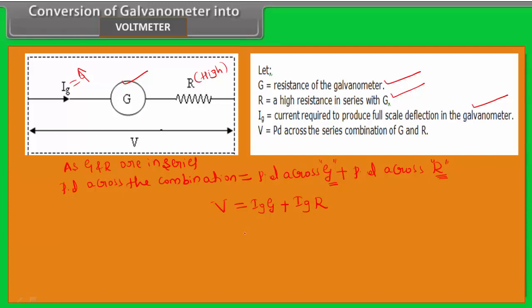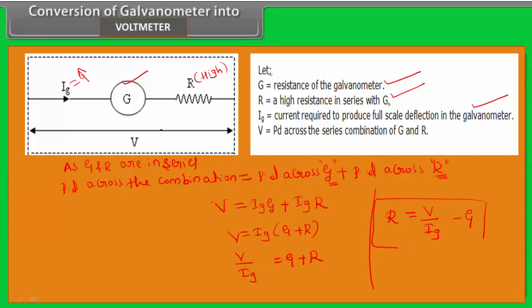The potential difference across this combination is mathematically denoted by V. V is equal to Ig times G, plus Ig times R. Since Ig is common, V equals Ig into (G plus R), or V divided by Ig equals G plus R. Therefore, the value of high resistance R equals V divided by Ig minus G. This gives the value of high resistance to be placed in series with the coil of the moving coil galvanometer to convert it into a voltmeter.